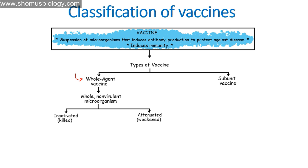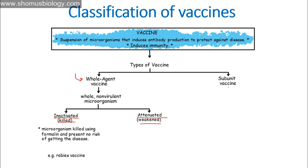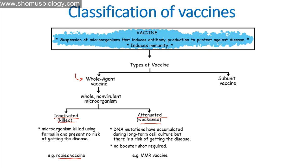Whole agent vaccines can be further divided into two types: inactivated and attenuated. Inactivated means killed — we totally kill the microorganism using formalin solution, so there is no risk of getting the disease at all. An example is the rabies vaccine, which is a killed vaccine. Attenuated means weakened — we reduce the pathogenic activity of the microorganism but do not kill it entirely.